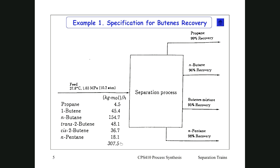With a feed of given composition and physical properties, we put it into a separation process to get out propane and pentane — C3 at the top, C5 at the bottom — and then separate butane from butenes. The components are propane, 1-butene, N-butene, N-butane, trans-2-butene, and cis-2-butene, listed in order of relative volatility with the most volatile written at the top by convention.